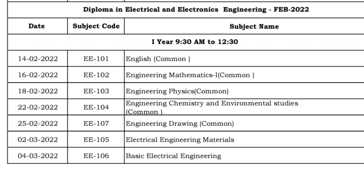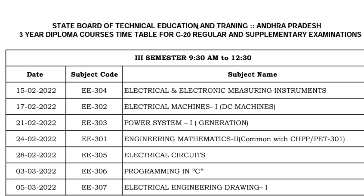EEE third month: Basic Electrical Engineering on 4th. Next, third semester and fifth semester regular section, 9:30 to 12:30 AM morning section. Fifth semester subjects: Power Systems on 15th, Engineering Mathematics 2 on 24th, Electrical Circuits on 28th, Programming in C on 3rd, and Electrical Engineering Drawing on 5th.